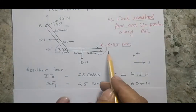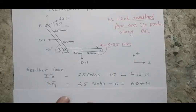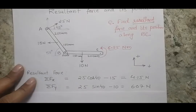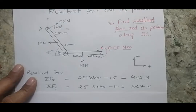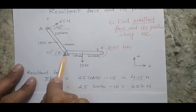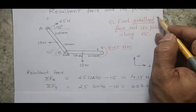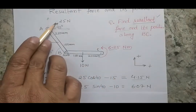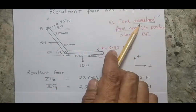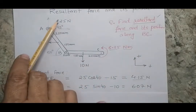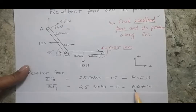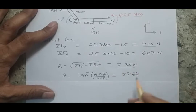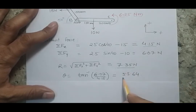I am not going to consider the couple in my force equation. Please remember, a couple is a special case of moment where there is only a rotational effect and there will not be any net force on the system. Also, we are not taking the reaction at point B because we are interested in finding the resultant of the external forces only — the replacement of those forces with a single force. The resultant comes out as 7.35 with an angle of 55.64 degrees.